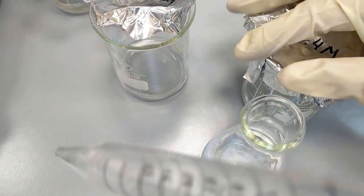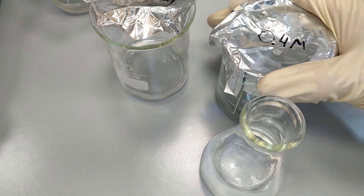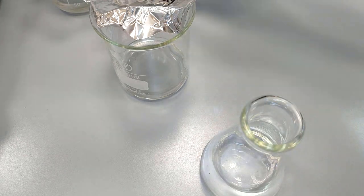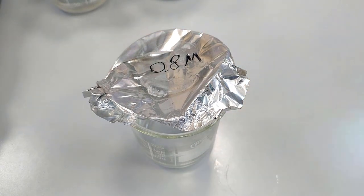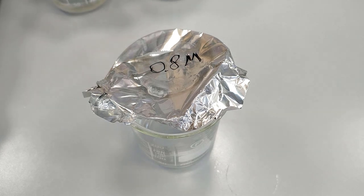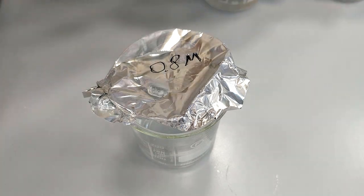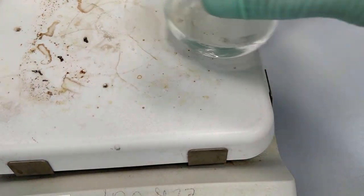After pipetting it up and down, we switch to the magnetic stirrer. So 0.4 molar concentration is ready. We place the magnetic beam inside the solution of 0.8 molar concentration and place it on the stirrer.